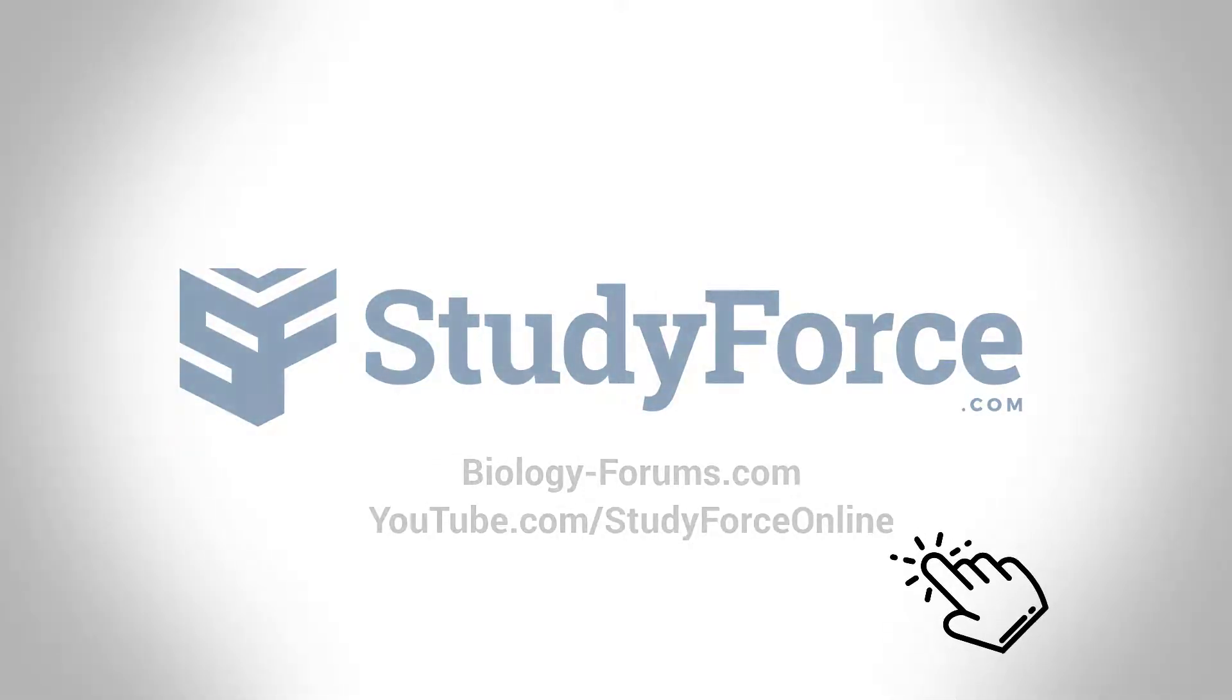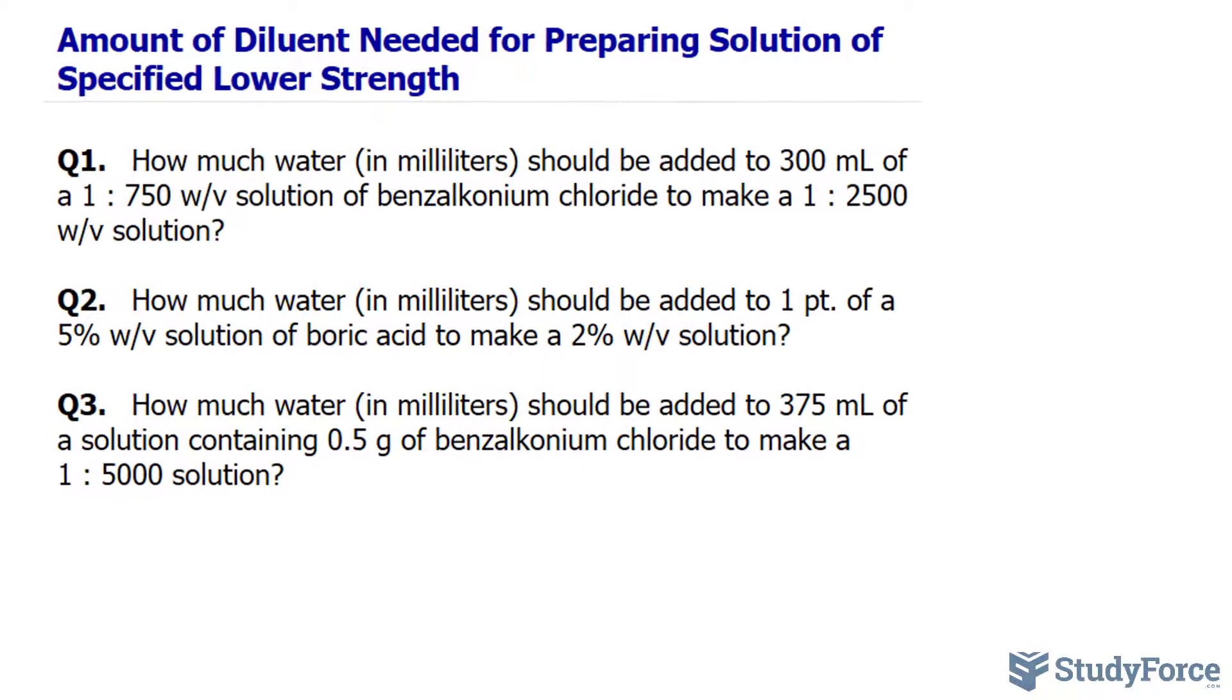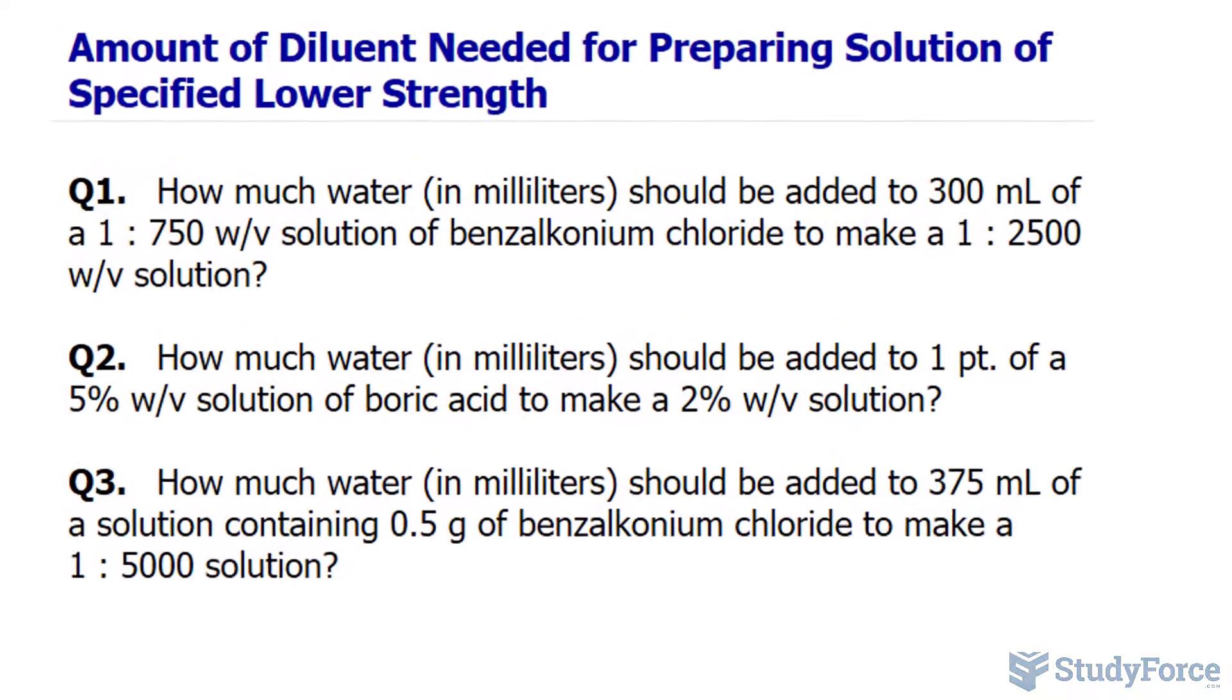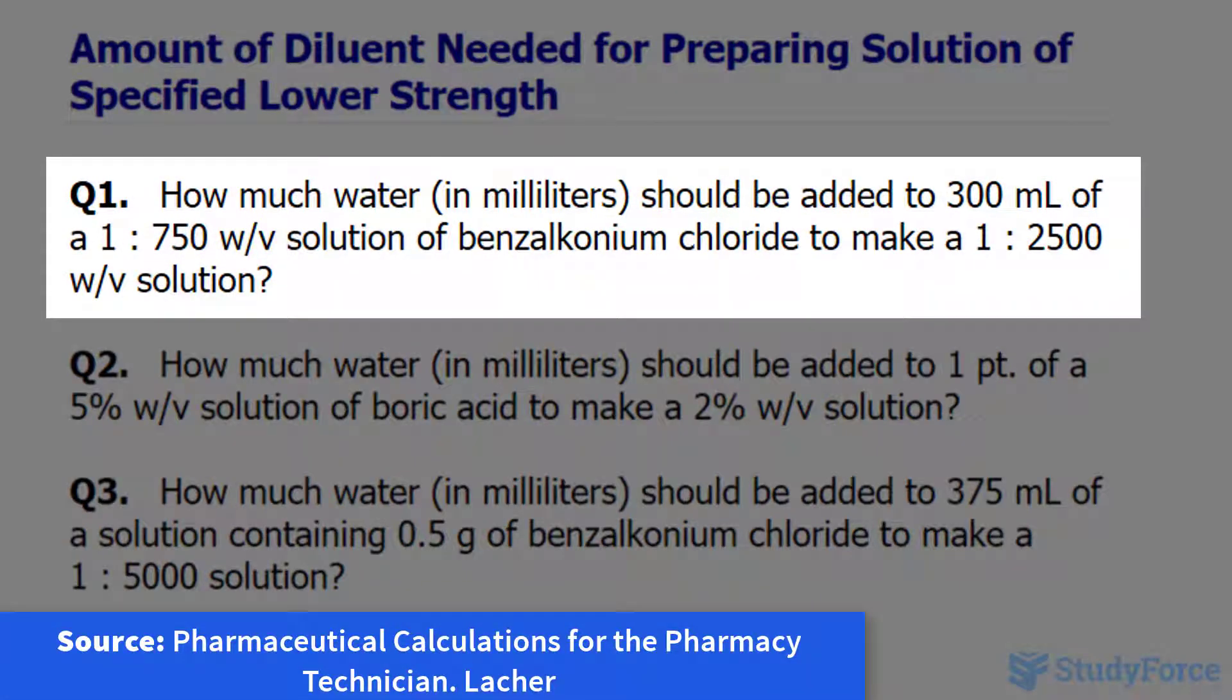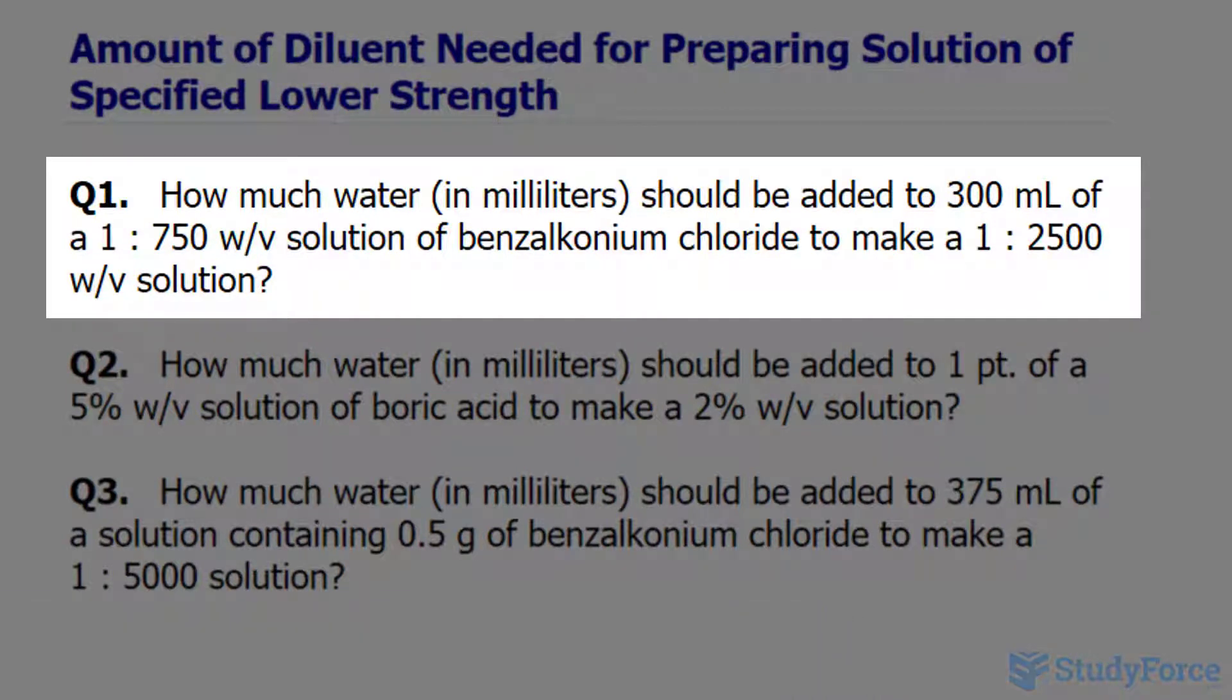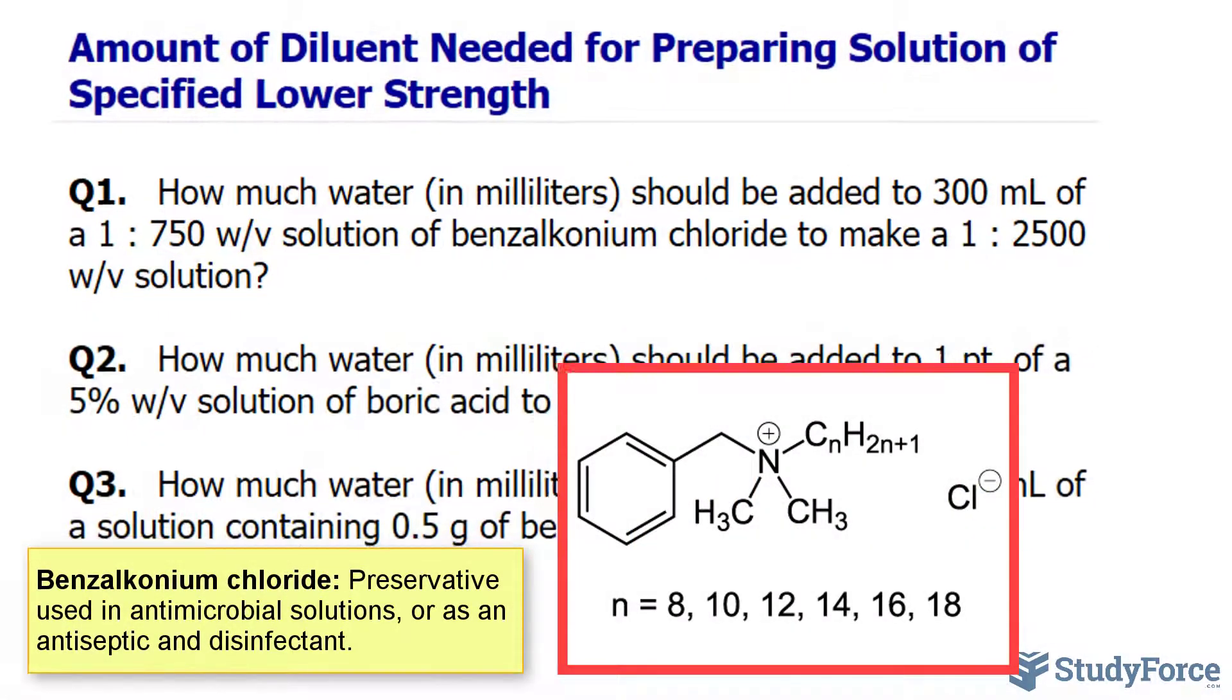In this quick video, I'll show you how to calculate the amount of diluent needed for preparing a solution of specified lower strength. I have three questions prepared for you, starting with question number one. How much water in milliliters should be added to 300 milliliters of a 1 to 750 weight per volume solution of benzalkonium chloride to make a 1 to 2500 weight per volume solution?